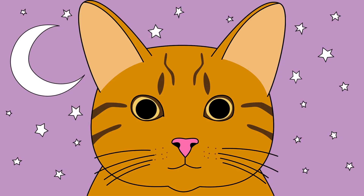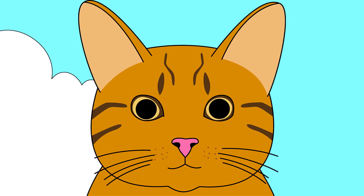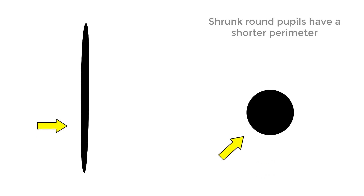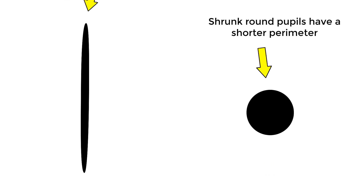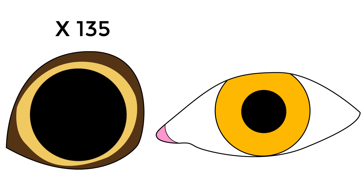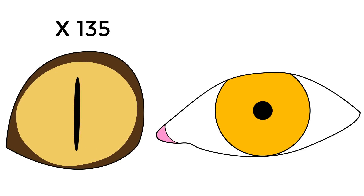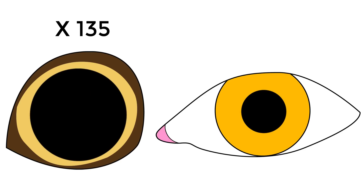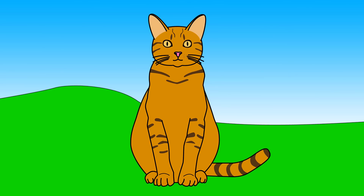In the dark, cats' pupils expand dramatically to capture available light, and in bright conditions they shrink into slits. A vertical slit already has a long perimeter, so it would be easier for it to become much wider. Cats' pupils expand to a maximum area 135 times greater than their minimum area, whereas our pupils only expand and contract 15-fold.